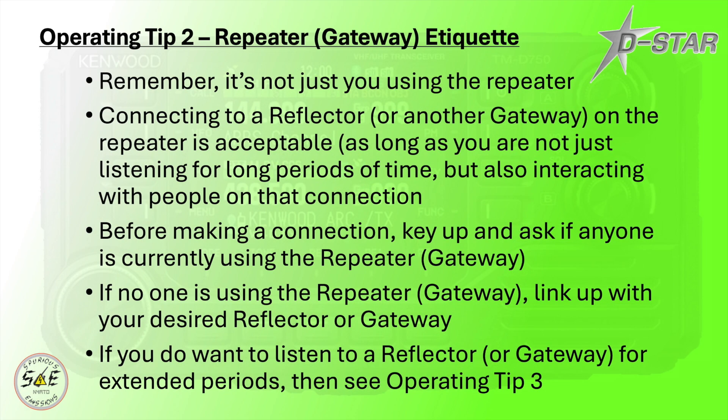Now that everyone's hearing you, it's time to move on to operating tip number 2: repeater or gateway etiquette. Remember, it's not just you using the repeater. Connecting to a reflector or another gateway on the repeater is acceptable as long as you're not just listening for long periods but also interacting with people on that connection. Before making a connection, key up and ask if anyone is currently using the repeater or gateway. If no one is, link up with your desired reflector or gateway. If you want to listen to a reflector or gateway for extended periods, then you'll want to see operating tip number 3.